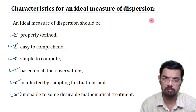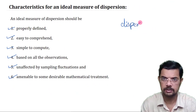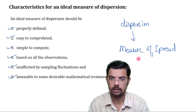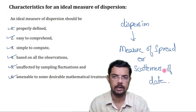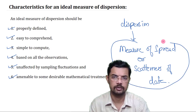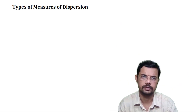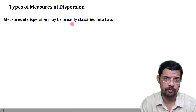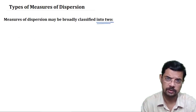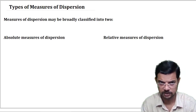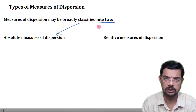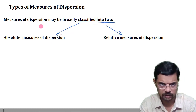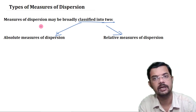Now we shall discuss the types of dispersion. Dispersion is the measure of spread or scatterness of data. The different measures of dispersion are classified into two parts: the first is absolute measures of dispersion, and the second is relative measures of dispersion.